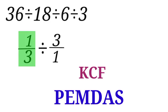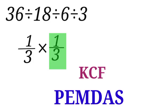For keep, we are going to keep 1 over 3. For C which is change, we are going to change division to multiplication. And for flip, we are going to flip 3 over 1: we bring 3 to the denominator and take 1 up to the numerator. So we'll now have a new expression which is 1 over 3 times 1 over 3.